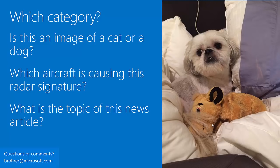Another very common question is 'which category?' — if I get a picture, is it a cat or a dog? Or if I see a radar signature, which aircraft in my library is probably causing it? Or if I read a news article, which topic does it cover? This type of algorithm is called classification, and it's used to assign a category or set of categories to new examples.